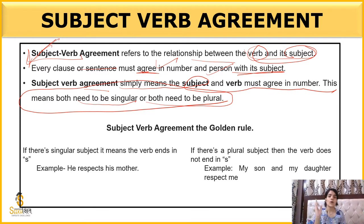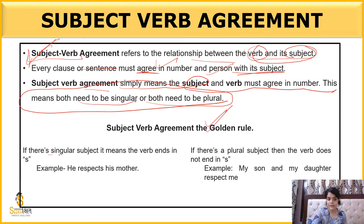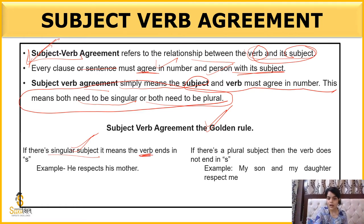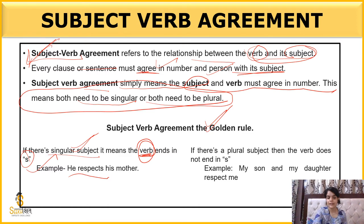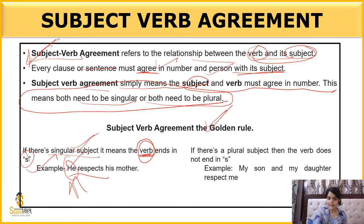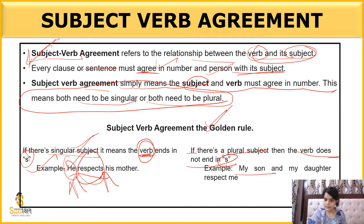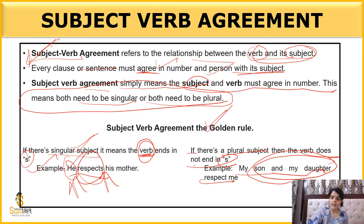This is a golden rule, and there are many rules we call golden rules. Subject-verb agreement means that if there is a singular subject — if we are talking about one person — then our verb will always end in S. For example: 'He respects his mother.' He is the subject, and 'respects' ends in S. If there is a plural subject, the verb does not end in S. For example: 'My son and my daughter respect me.' We are talking about more than one person, so 'respect' — not 'respects' — is used.